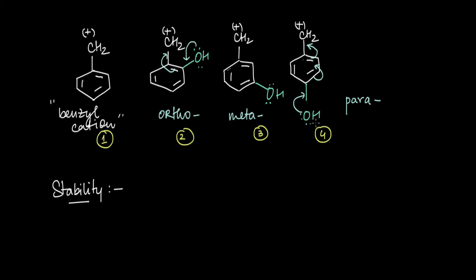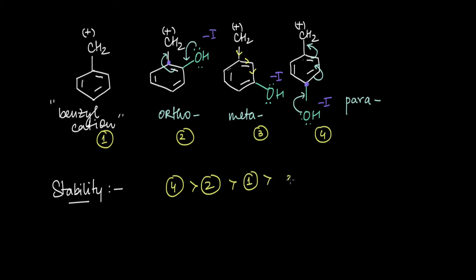To summarize: putting an OH group at ortho or para stabilizes the benzyl cation via resonance, while putting it at meta cannot. So ortho and para are more stable than meta. Between ortho and para, resonance is distance-independent so it's not a differentiating factor, but the inductive effect is — the −I group of OH placed closer at ortho destabilizes it more than at para. So para is more stable than ortho. And for meta, while there's no resonance stabilization, the −I inductive effect still pulls electrons away and actually destabilizes the cation compared to the plain benzyl cation.